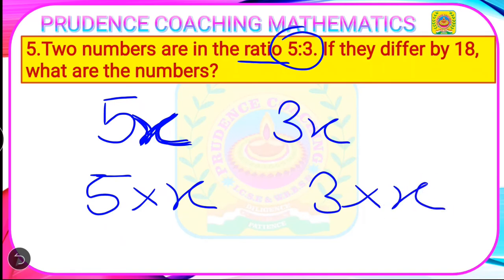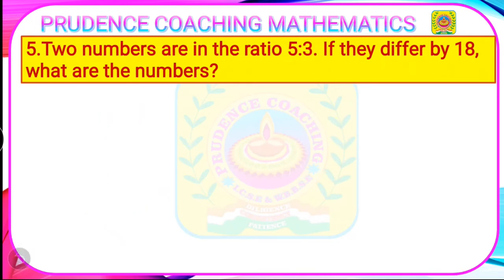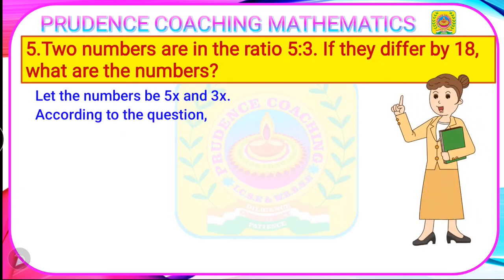Now according to the question, if they differ by 18, means their difference, means bigger number minus smaller number, if you do, then you will get 18. What are the numbers? You need to find out the numbers. So let's start with the solution. First, you are going to write, let the numbers be 5x and 3x. Next, you will write, according to the question, 5x minus 3x equals to 18.